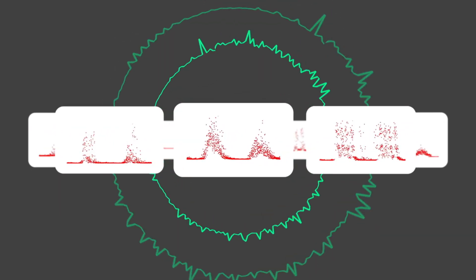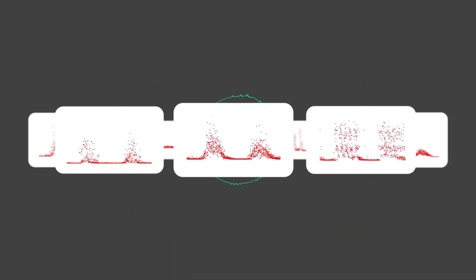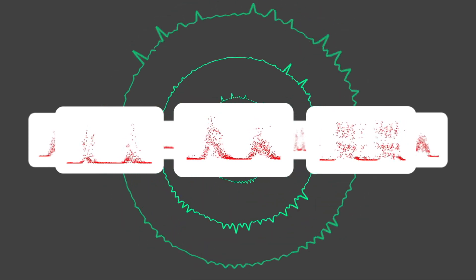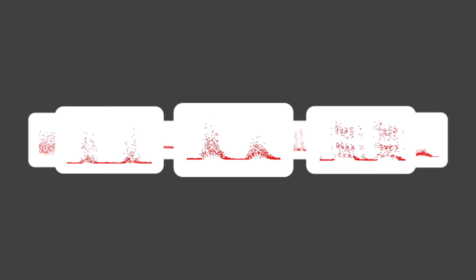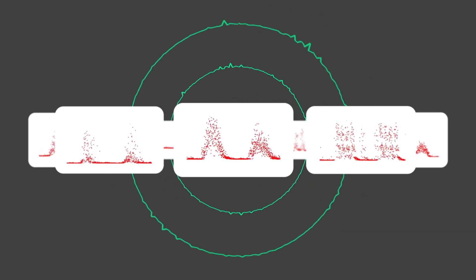All partial discharges behave differently and have their distinct discharge pattern. To be able to decide on corrective actions, you need to know the type of the partial discharge. The discharge pattern displayed here is typical for a surface discharge.